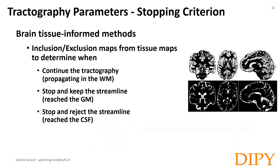One solution is to incorporate this information in the tractography method. On healthy brains, we know tractography should continue in the white matter, shouldn't stop in the CSF, and must reach the gray matter. We can thus better define those rules using the partial volume estimate of each tissue type. Moreover, partial volume estimates allow the tractography to determine if the generated streamline should or shouldn't be included in the final tractogram — essentially, by knowing the tissue type, we can keep only the streamlines that end in the gray matter.